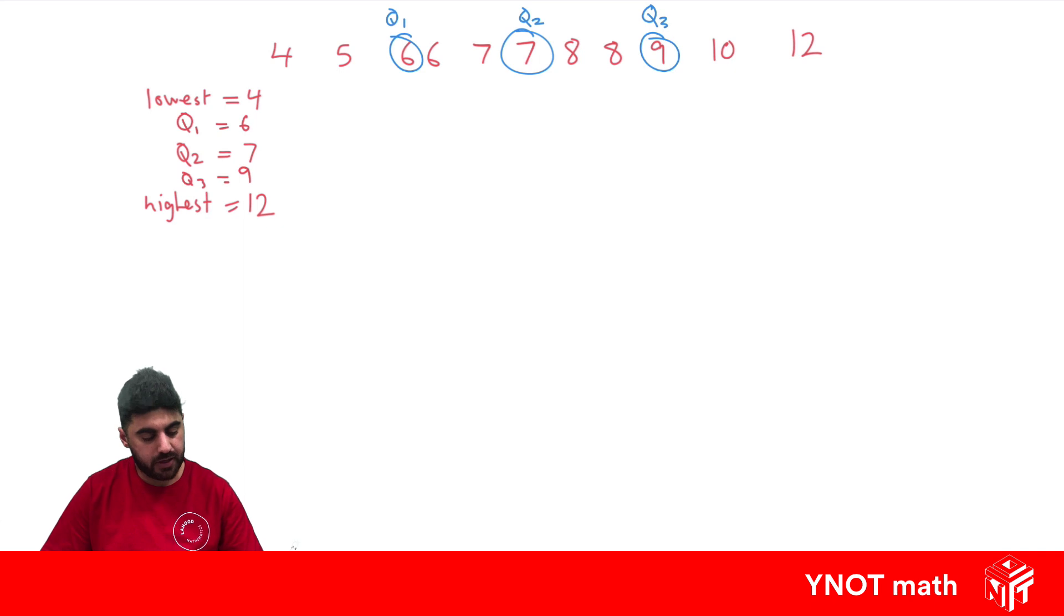And that's all the information we need to draw a box plot. So we can go ahead and make a scale. Let's draw a line. And we've got data ranging from 4 to 12. So maybe 3, 4, 5, 6, 7, 8, 9, 10, 11, 12, and 13.